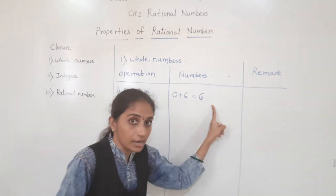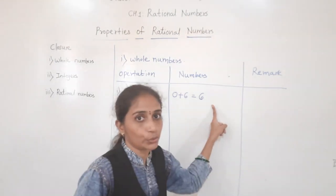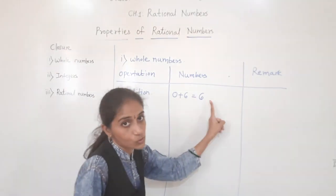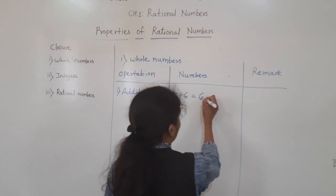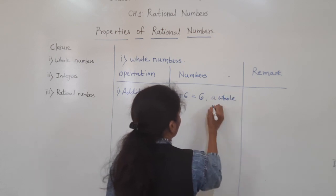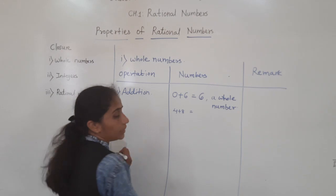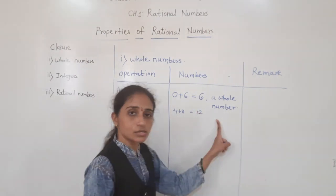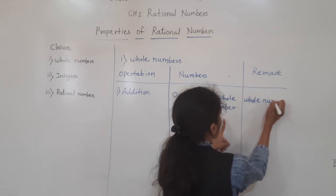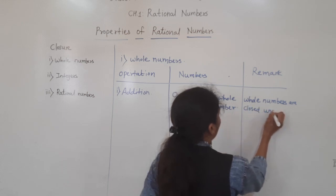Whole numbers start from 0: 0, 1, 2, 3, 4, 5, 6 and so on — all these numbers are whole numbers. So 0 plus 6 equals 6, and 6 is a whole number. One more example: 4 plus 8 equals 12. Is 12 also a whole number? Yes, 12 is also a whole number. So, whole numbers are closed under addition.